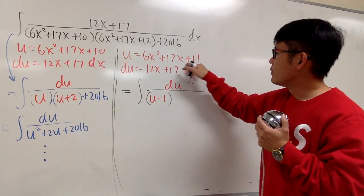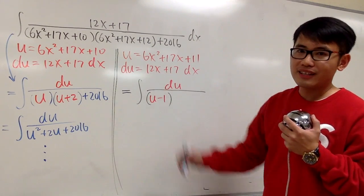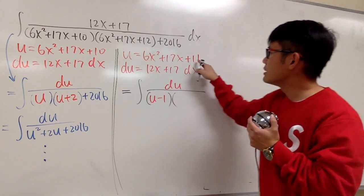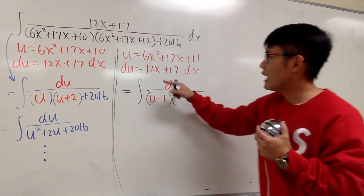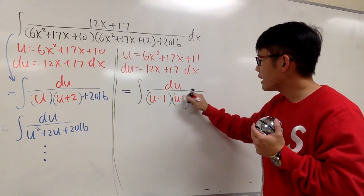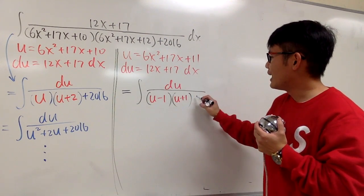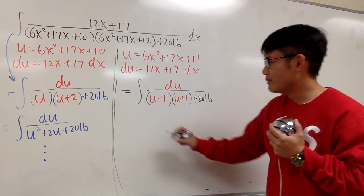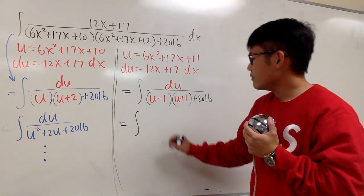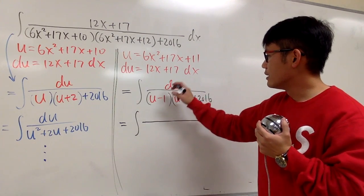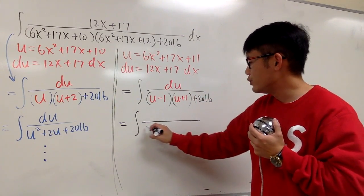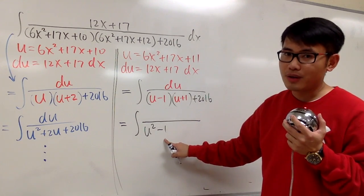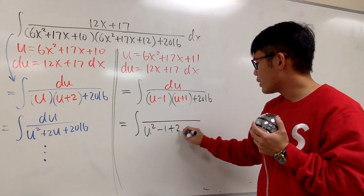Minus 1, and then we have the plus 10. And then for the second parenthesis, this is plus 12, this is plus 11. We need to have u plus 1. And then we still have the plus 2016. Why is this much better? Because now you see, let me multiply out the bottom. This is just u squared minus 1, right? This times that, just u squared minus 1. And then we still have the plus 2016.